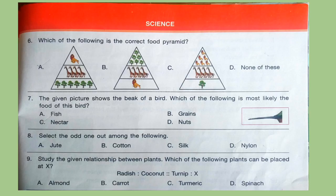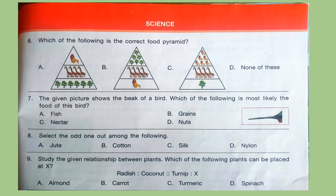Question 8: Select the odd one out among the following. Options are jute, cotton, silk, nylon. Correct answer is option D, nylon. Question 9: Study the given relationship between plants. Which of the following plants can be placed at X? Radish is to coconut; similarly, turnip is to X. Correct answer is option A, almond.